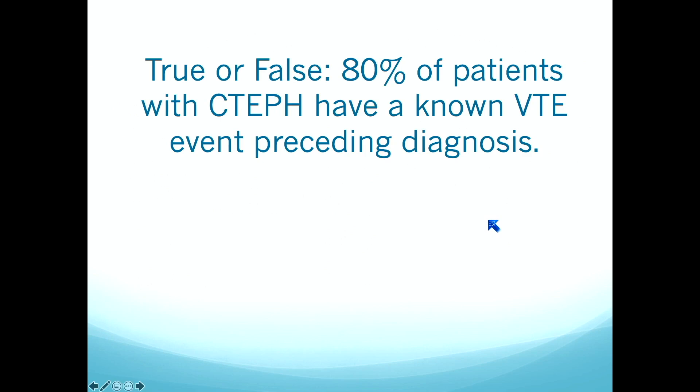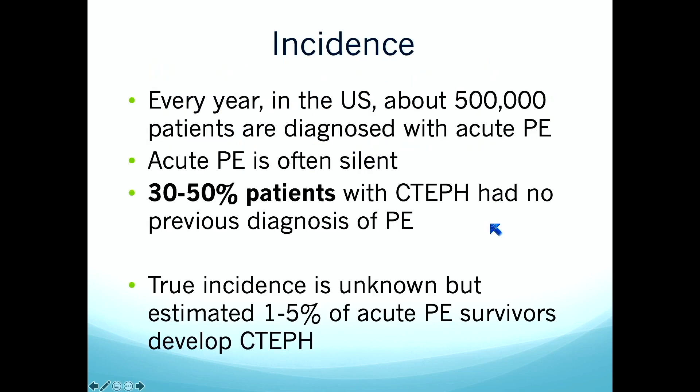Quick question — true or false: 80% of patients with CTEPH have a known thromboembolism event preceding the diagnosis. The answer is false. Every year in the US, half a million people are diagnosed with acute pulmonary embolism, and it's often silent — as many as half of CTEPH patients had no previous diagnosis of PE or venous thromboembolism, even including DVT. We suspect somewhere between 1 and 5% of acute PE survivors go on to develop CTEPH.